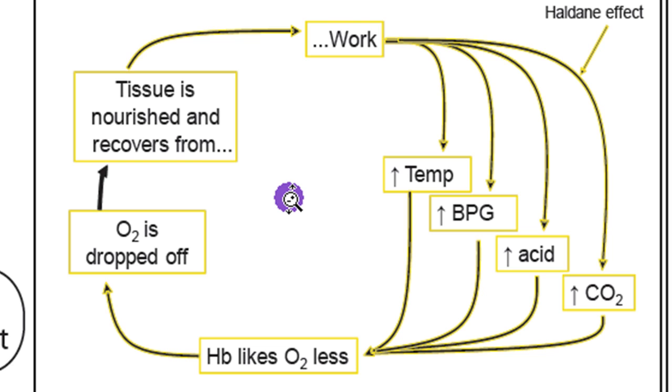Hemoglobin is absolutely brilliant at knowing when to drop off oxygen. Real simply, hemoglobin wants to drop off oxygen when the tissue is doing some sort of work or when it's metabolizing. There are some signals that are put off when tissue is working. For example, if tissue works, it generally creates heat, so there's an increase in temperature.